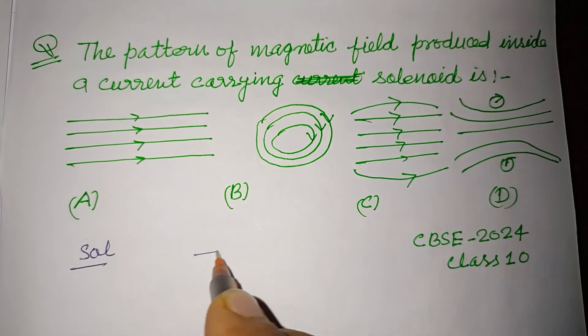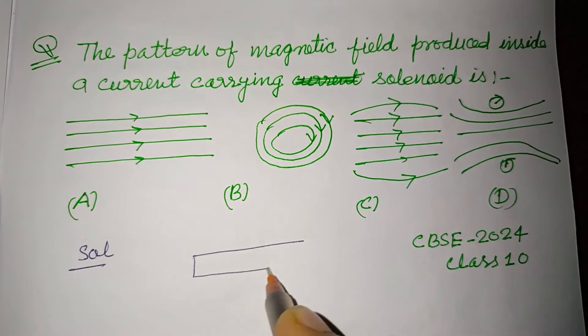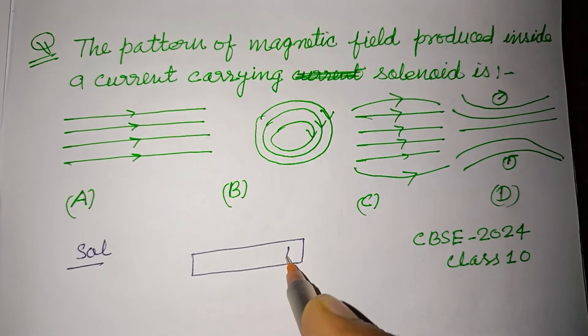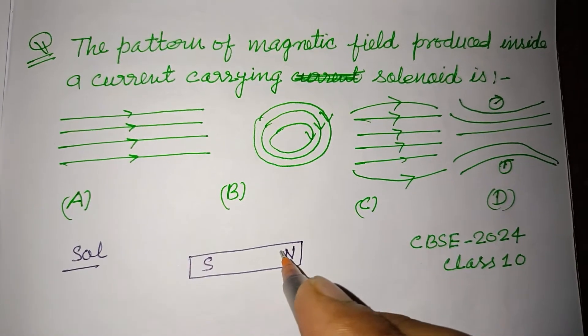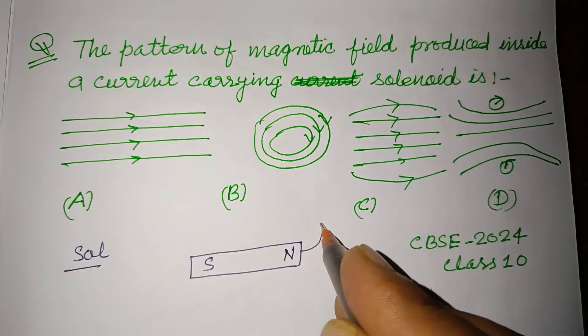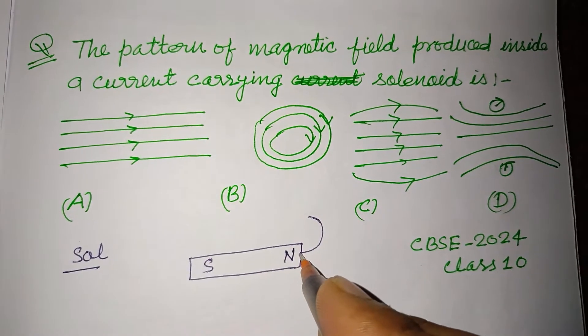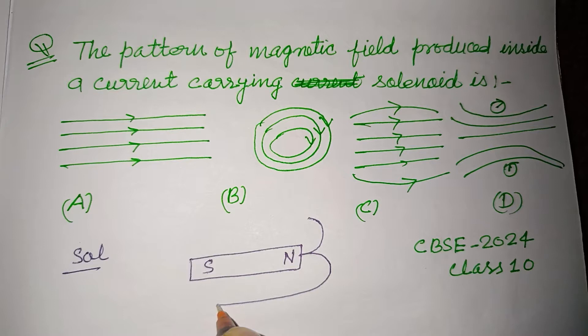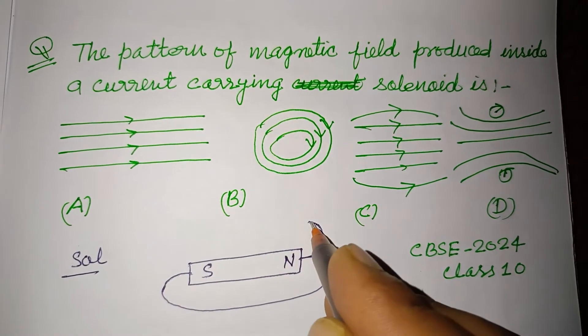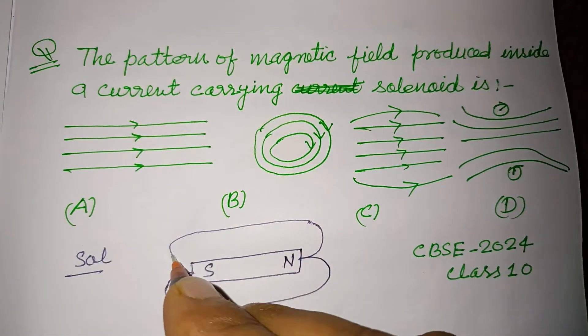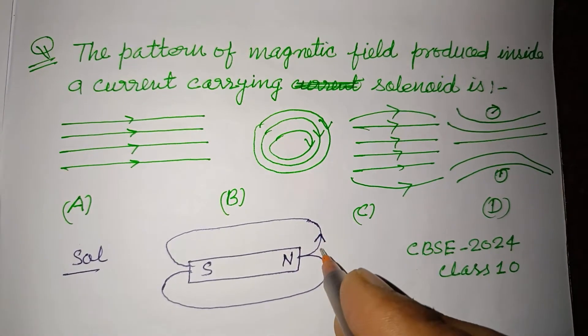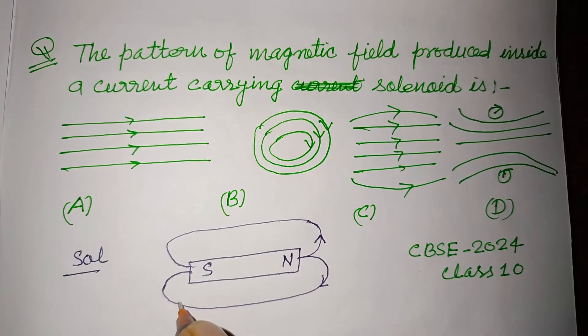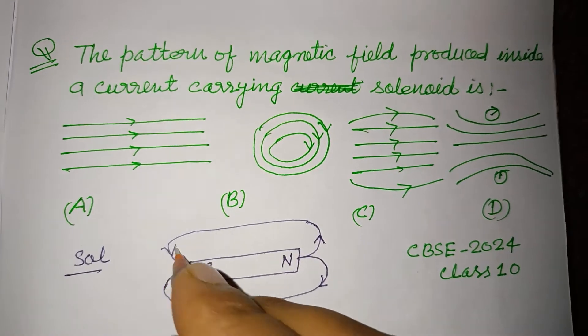As you know, this is a magnet with its north pole and south pole. The magnetic lines seem to come out from the north pole and they enter in the south pole. These are closed curves which are coming from north pole and entering in south pole.